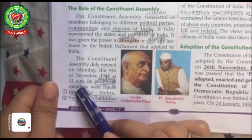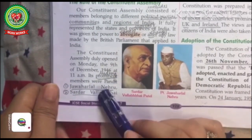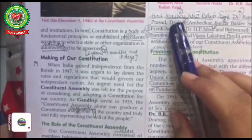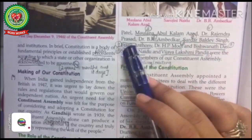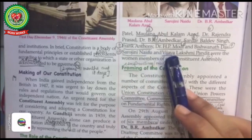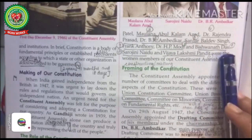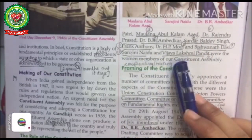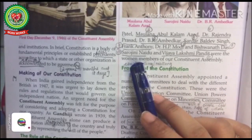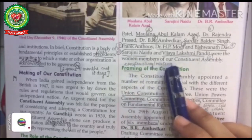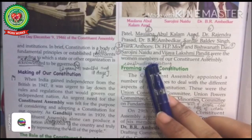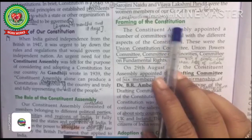The Constituent Assembly duly opened on Monday, the 9th of December 1946, at 11 AM. Its prominent members were: Pandit Jawaharlal Nehru, Sardar Vallabhbhai Patel, Maulana Abul Kalam Azad, Dr. Rajendra Prasad, Dr. B.R. Ambedkar, Sardar Baldev Singh, Frank Anthony, Dr. H.P. Mody, Bishnath Das, Sarojini Naidu, and Vijayalakshmi Pandit. Sarojini Naidu and Vijayalakshmi Pandit were the two prominent women members. Out of approximately 300 members, nine were women.